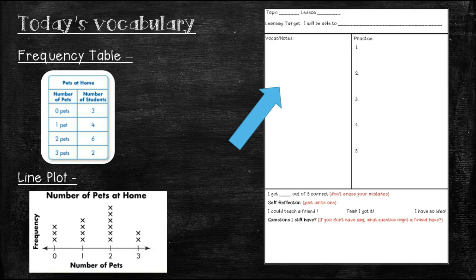We have two more types of vocabulary words, but instead of having you write a definition, I would like you to copy down what they look like. The first one is a frequency table, and what you'll notice about a frequency table is that it has two columns. It has, for this case, if we're talking about the number of pets people have in their home, the first column would be the number of pets, and the second column would be the number of students.